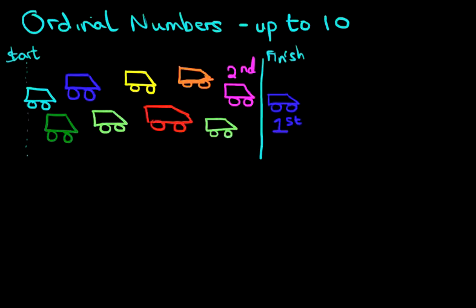The light green or the lime colored car. Well this one is in third place. This is how we write it down. Three with an RD. We keep going. The next car in the race is in fourth place. Do you see that in fourth place?